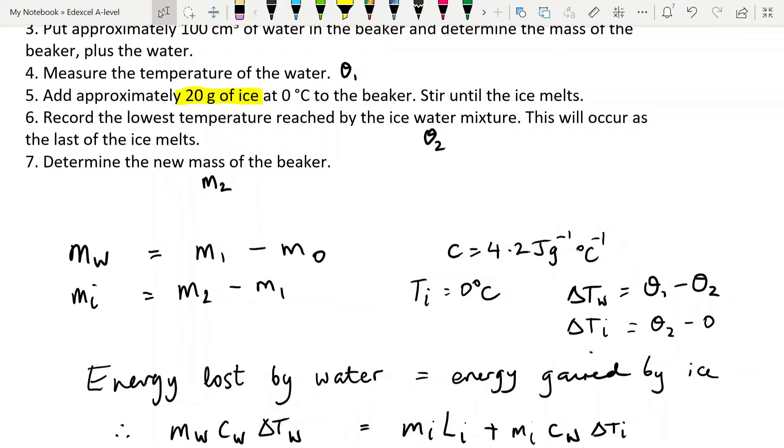So what you have to start doing now is processing your data. So what we're going to do first of all is find what the mass of the water is. And you do that by taking M1 minus M0. M1 was the mass of the beaker plus water. M0 was the mass of the beaker by itself. We also want the mass of the ice that we put into the water, the actual mass. We said it was going to be approximately 20 grams. You need to know exactly how much. So you take M2, which was mass of beaker plus water plus ice. And you subtract mass of beaker plus water from that. So that you get the exact amount of ice that you've put in.